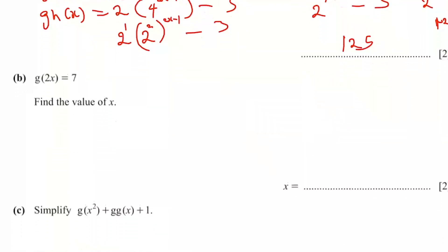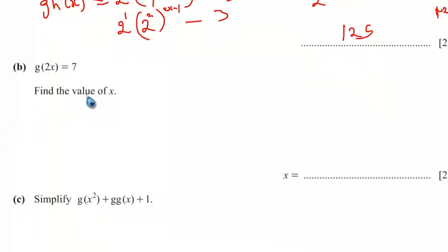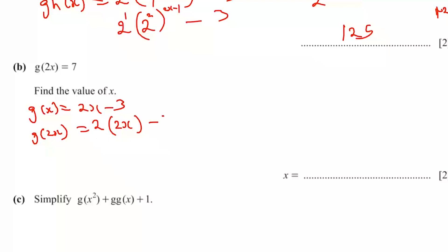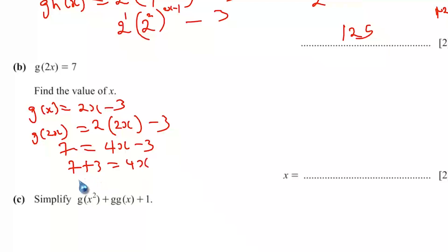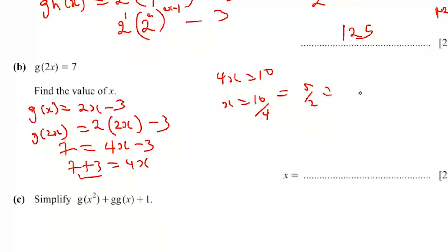Part B: g(2x) equals 7, find x. g(x) equals 2x minus 3, so g(2x) equals 2 times 2x minus 3 equals 4x minus 3. Setting this equal to 7: 4x minus 3 equals 7, so 4x equals 10, giving x equals 10 over 4, which is 2.5.